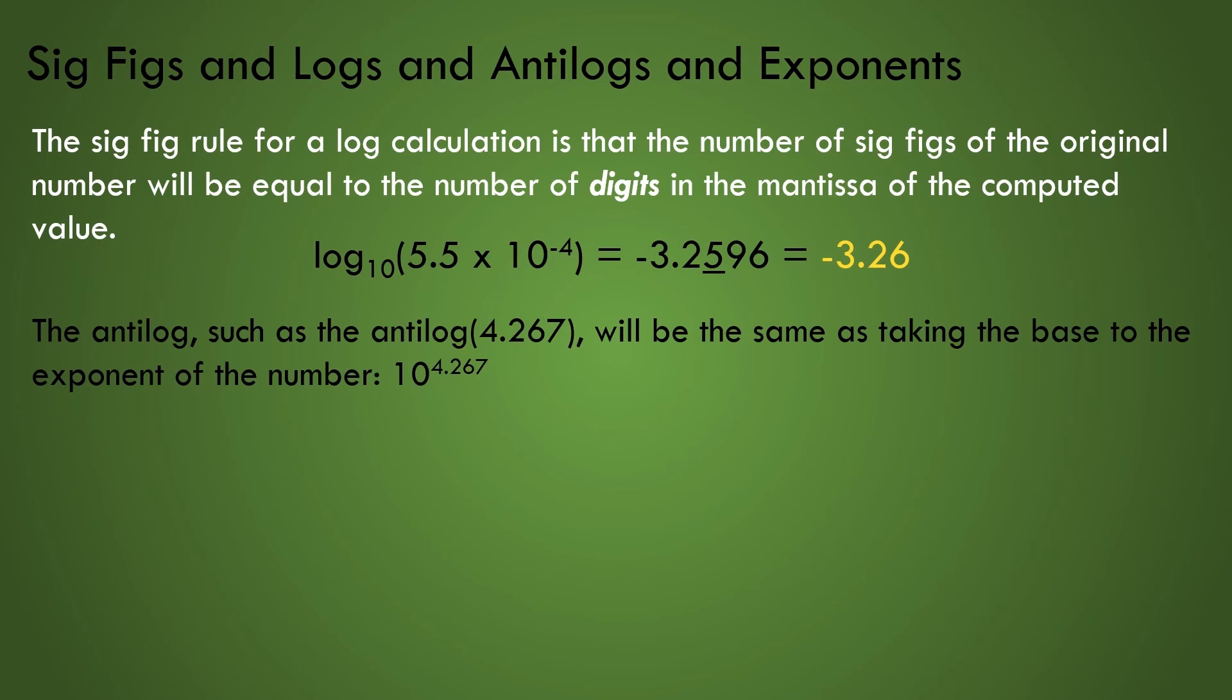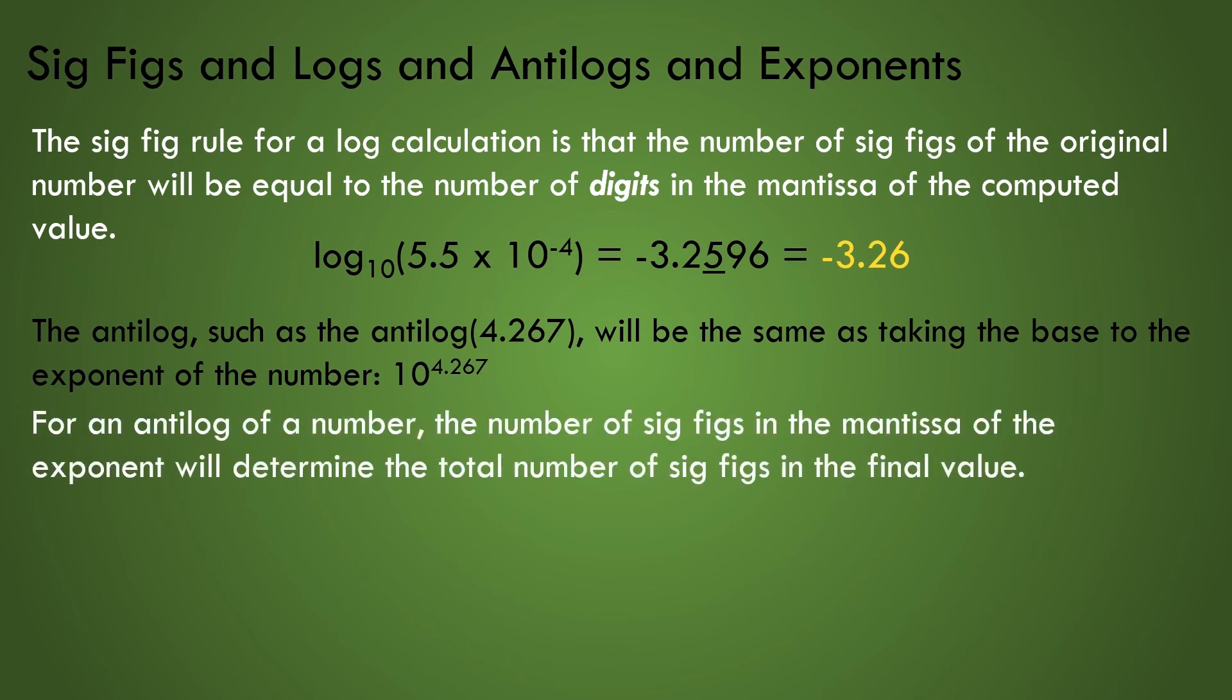When we take the antilog of a value, such as the antilog of 4.267, we recognize this is the same as taking the base to the exponent of the number, 10 to the power of 4.267. Now, let's write down the sig fig rule governing this antilog computation. For an antilog of a number, the number of sig figs in the mantissa of the exponent will determine the total number of the sig figs in the final value.